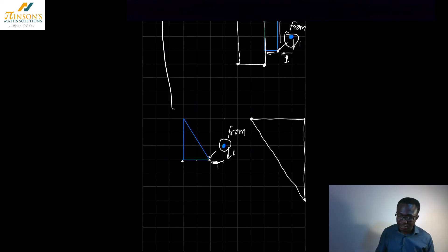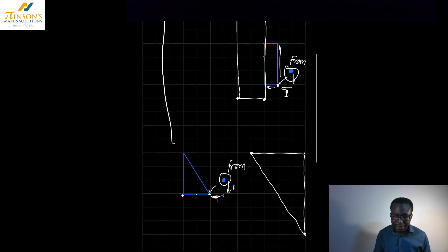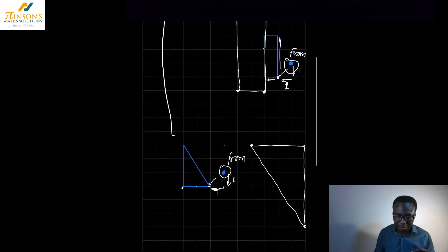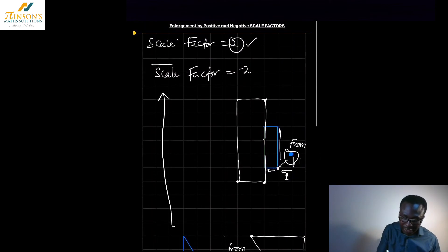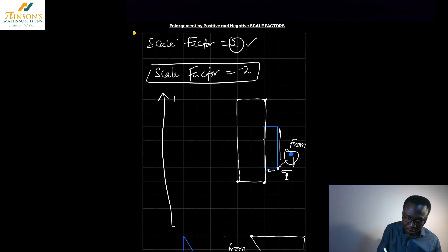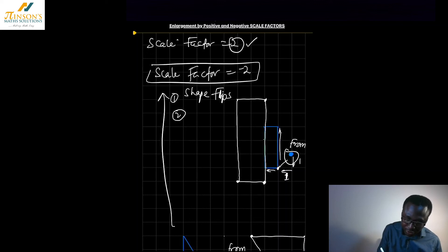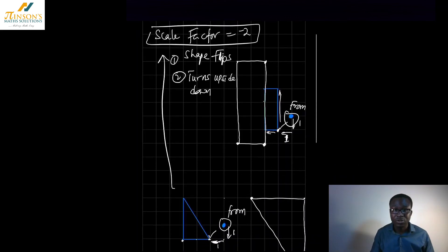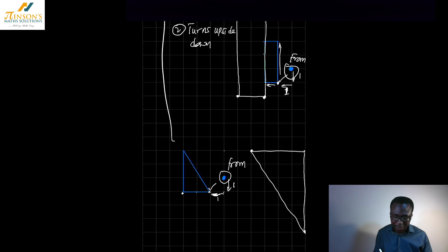With a negative scale factor, two things happen: number one, the shape flips; and number two, it turns upside down. So with a negative scale factor, the shape flips and turns upside down.